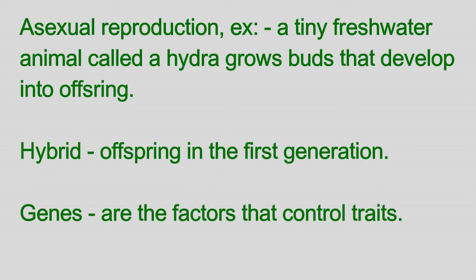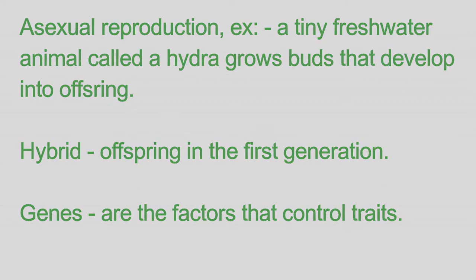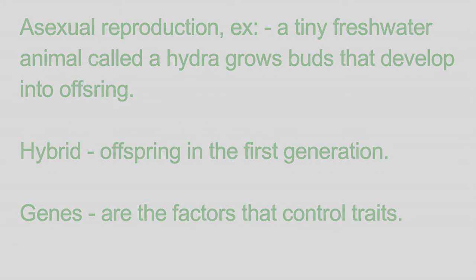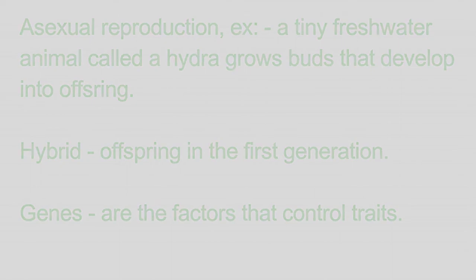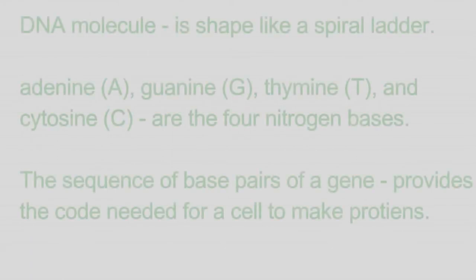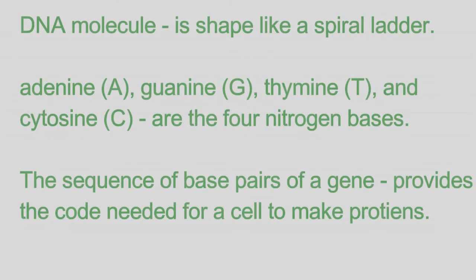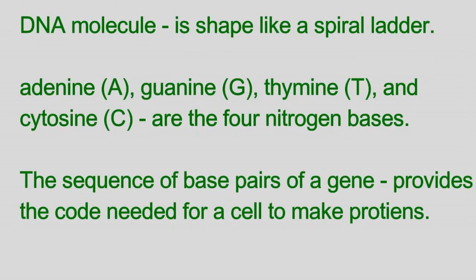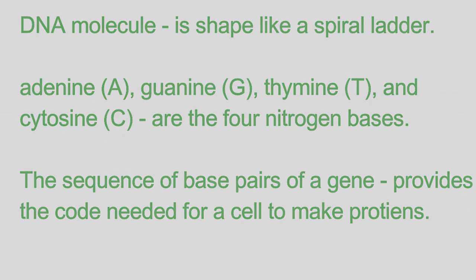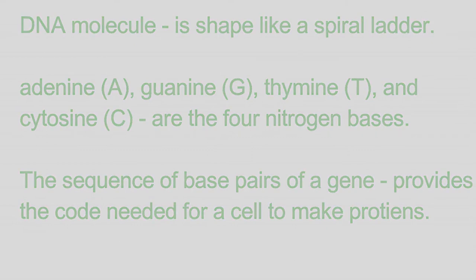Hybrid offspring in the first generation. Genes are the factors that control traits. DNA molecule is shaped like a spiral ladder. Adenine (A), guanine (G), thymine (T), and cytosine (C) are the four nitrogen bases. The sequence of these paired bases provides the code needed for a cell to make proteins.